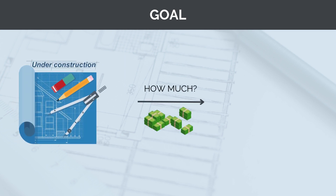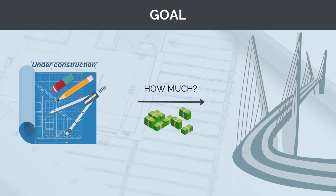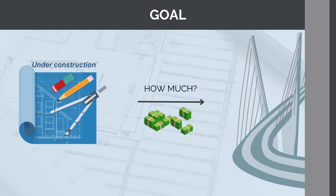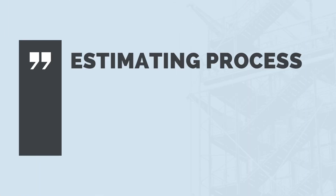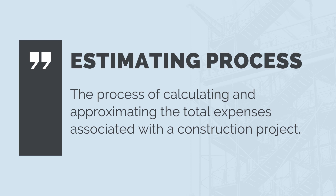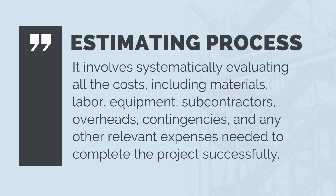At its most basic, the goal of construction estimating is to work out how much it costs to transform a set of drawings, specifications, and requirements into a finished product — to calculate a dollar figure to turn a set of drawings into reality. The estimating process is the process of calculating and approximating the total expenses associated with a construction project. It involves systematically evaluating all the costs including materials, labor, equipment, subcontractors, overheads, contingencies, and any other relevant expenses needed to complete the project successfully.